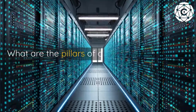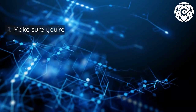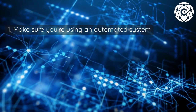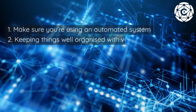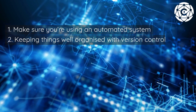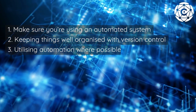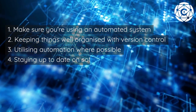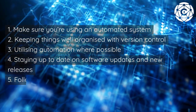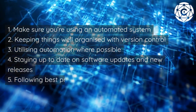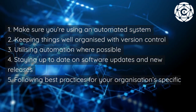What are the pillars of configuration management? 1. Make sure you're using an automated system. 2. Keeping things well organized with version control. 3. Utilizing automation where possible. 4. Staying up to date on software updates and new releases. 5. Following best practices for your organization's specific needs. 6. Keep things organized and structured.